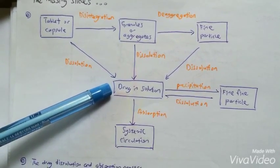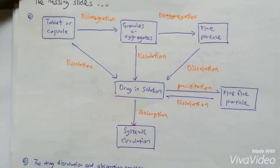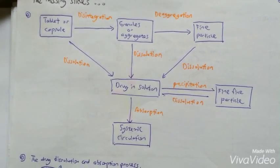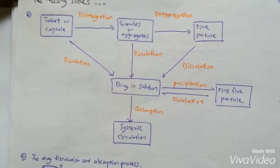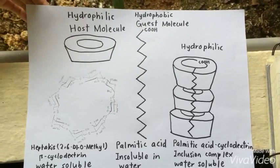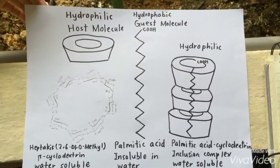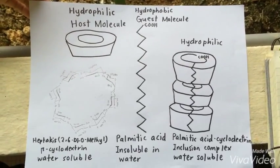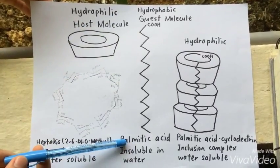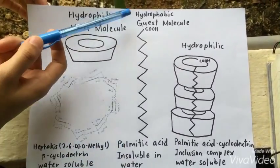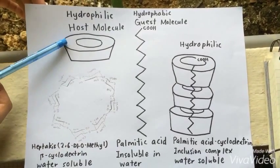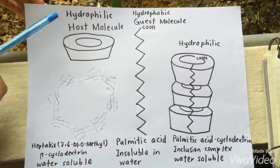Therefore, we need to increase the water solubility of the drug. But the problem is, what if the drug is lipophilic? The figure shows the encapsulation of palmitic acid as a guest molecule, which is hydrophobic, into the host molecule, beta-cyclodextrin, which is hydrophilic.